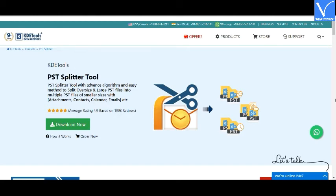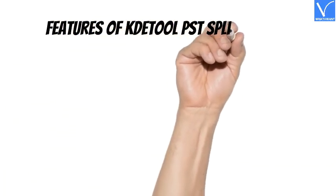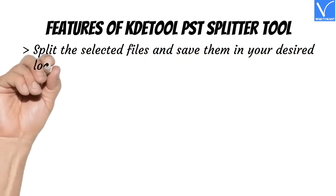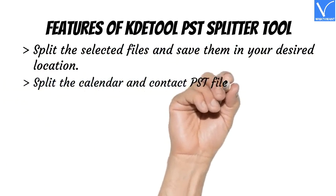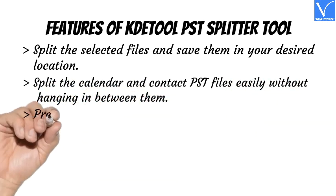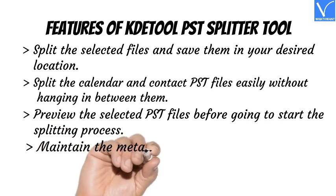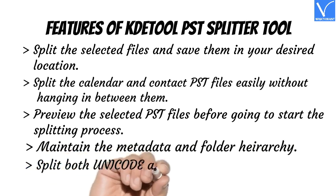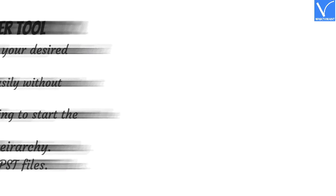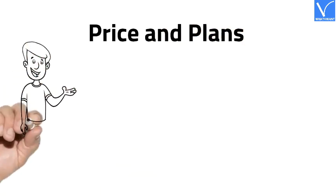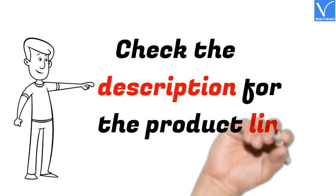This application is compatible with Windows 10, 8.1, 8, 7, Vista, XP, and supports Outlook versions 2019, 2016, 2013, 2010, and 2007. Features of KDE Tool PST Splitter: split selected files and save them in your desired location; split calendar and contact PST files easily; preview selected PST files before starting the splitting process; maintains metadata and folder hierarchy; splits both Unicode and ANSI format PST files. The price and plans are exhibiting on the screen. The product link is provided in the description.